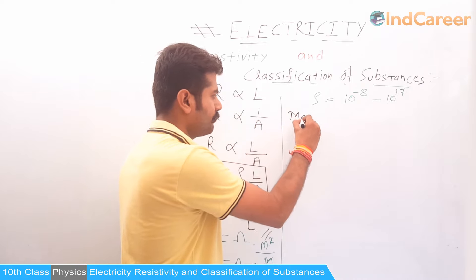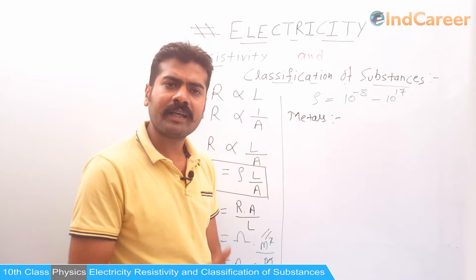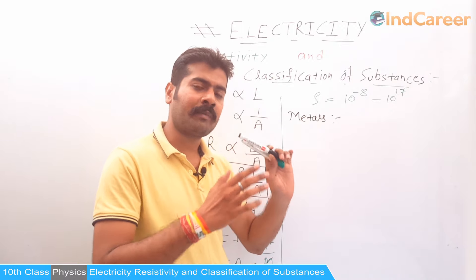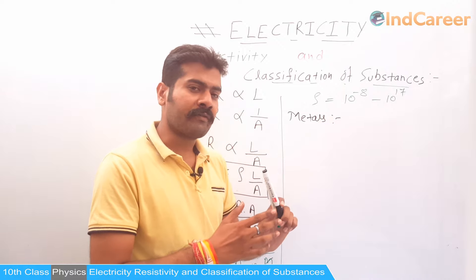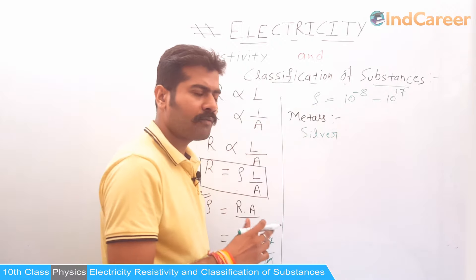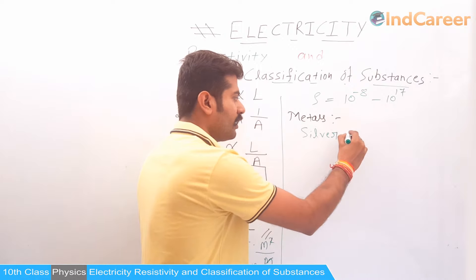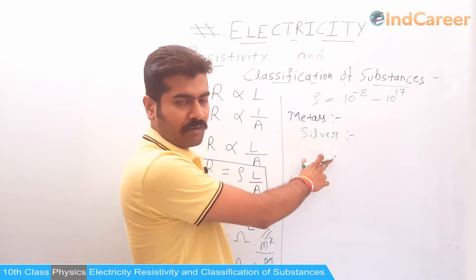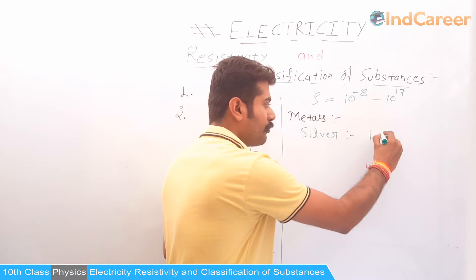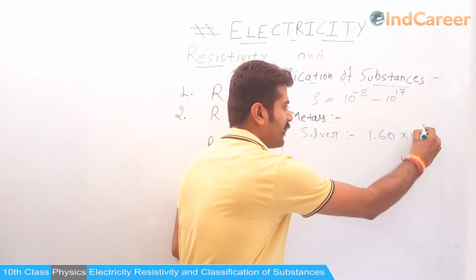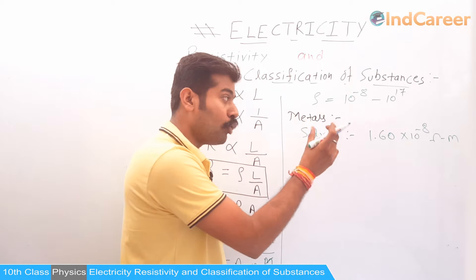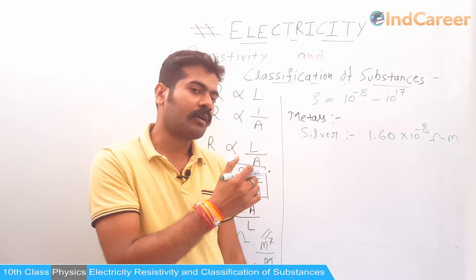Metals are generally conductors — they generally conduct electricity because they have free electrons. The first example is silver. Silver is the best conductor of electricity because it has the lowest value of resistivity, which is 1.60 into 10 to the power minus 8 Ohm-metre. That is why silver is the best conductor of electricity.